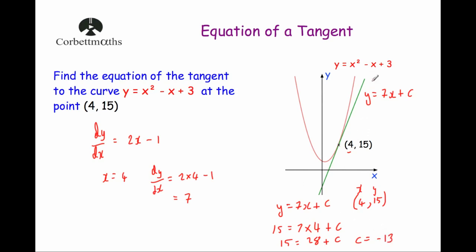And that's it. So the equation of this green line — the equation of the tangent to the curve at the point (4, 15) — will be y equals 7x minus 13. To find the equation of a tangent to a curve: first differentiate to get dy by dx, then substitute in the x value to get the gradient of the tangent, then put that gradient into y equals mx plus c, and substitute in the point to get the c value.